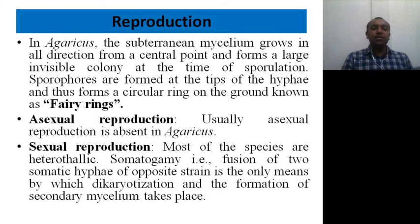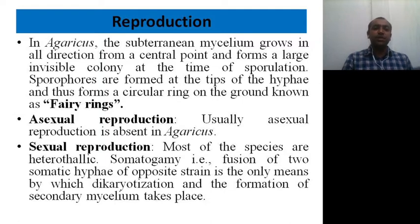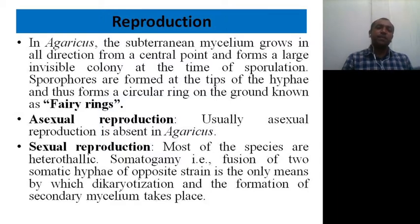Regarding reproduction, the subterranean mycelium grows in all directions and forms an invisible colony at the time of sporulation. Sporophores are formed at the tips of the hyphae, thus forming a circular ring known as the fairy ring.